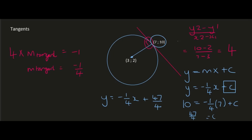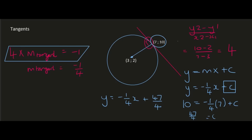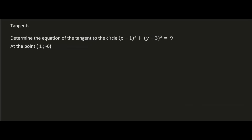The main idea is to know that the tangent and the radius form 90 degrees, and if they form 90 degrees then when you multiply their two gradients together it should give you -1.